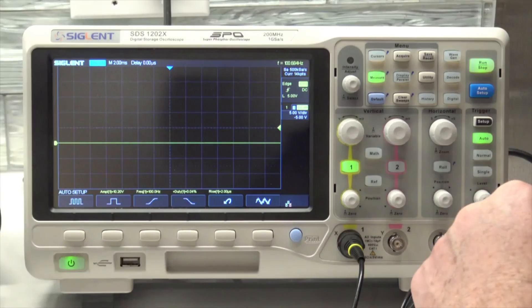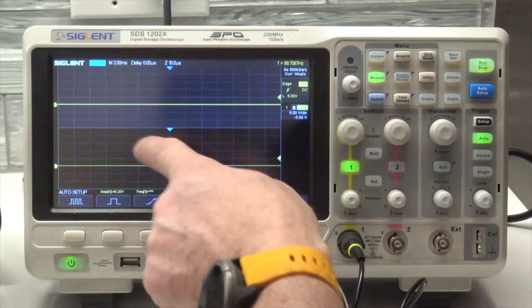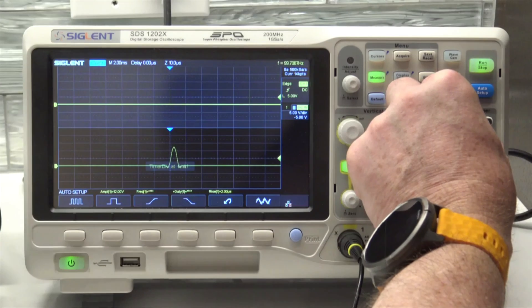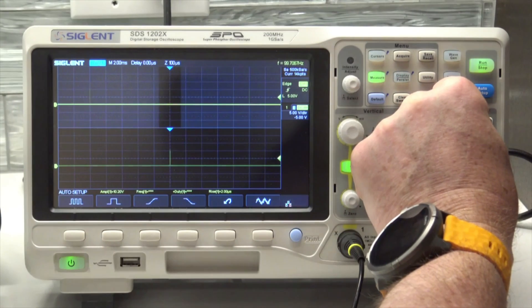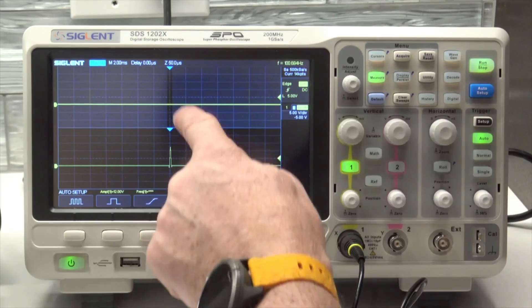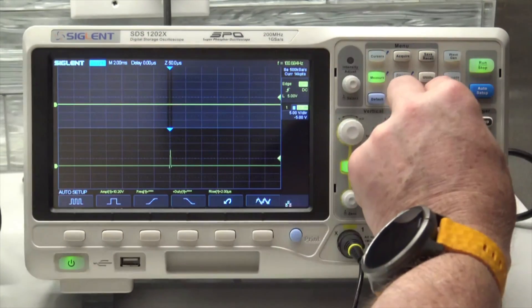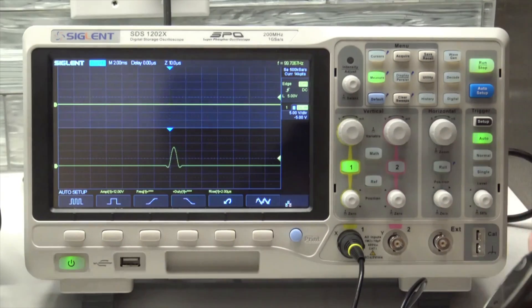I want to zoom in and look at that, so I'm going to hit this horizontal button. You see that little dark spot? When I zoom in like that, it zooms into the center of the screen, the trigger point. I see this little waveform, but I don't believe that.